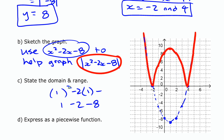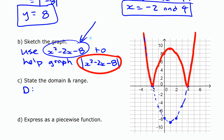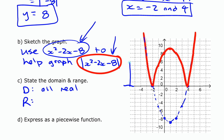Looking at domain and range: the domain doesn't change — any x value is permitted, so the domain is all real numbers. What changes is the range. Since we reflected all the negative parts up above, the range is y greater than or equal to 0. There can be no negative y values.